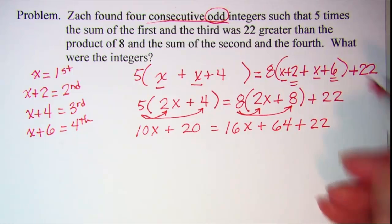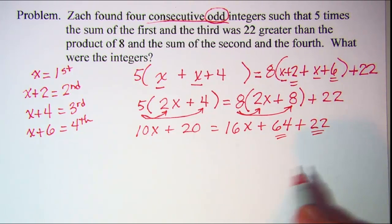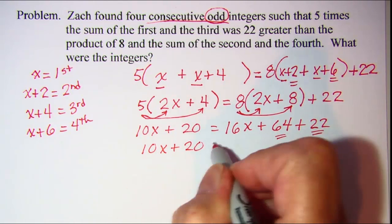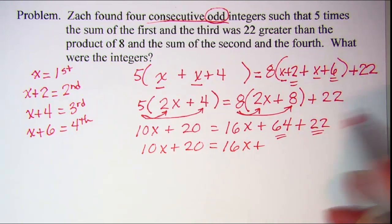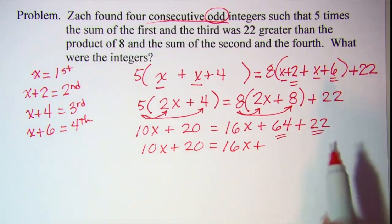Now let's combine over here on the right side. I have some like terms. I'll just copy this first part. 10x plus 20 equals 16x plus and then 64 plus 22 is 86.